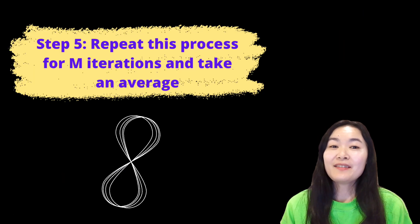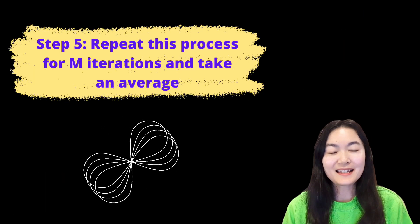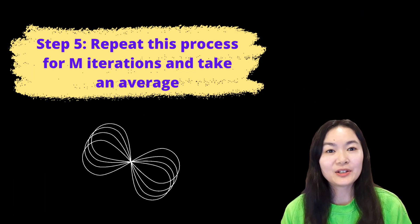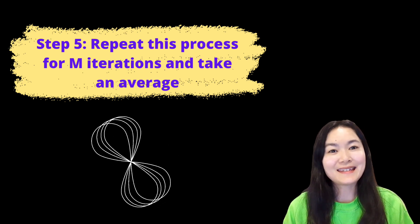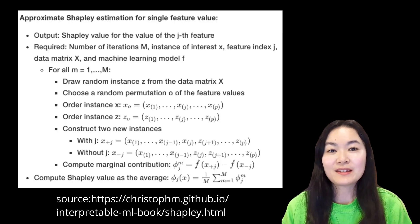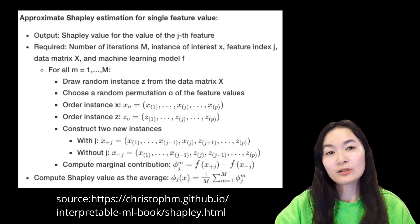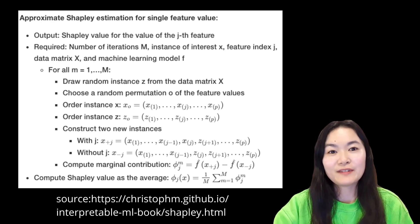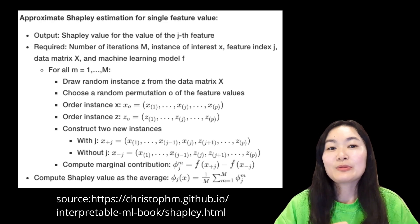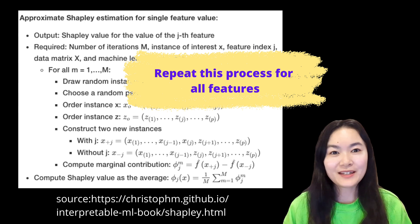Step 5 is to repeat this process for m iterations and take an average, and we will get the Shapley values of this feature. To recap, this is the algorithm of how the Shapley value is calculated for one feature, and then we can repeat this process for all features.